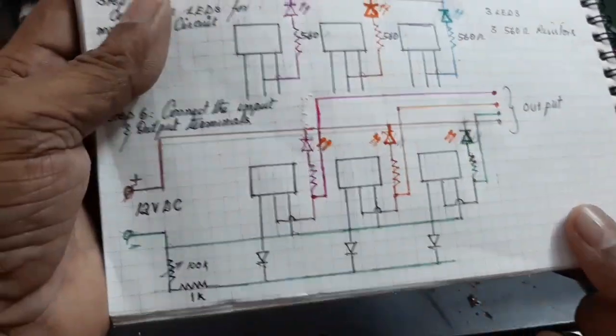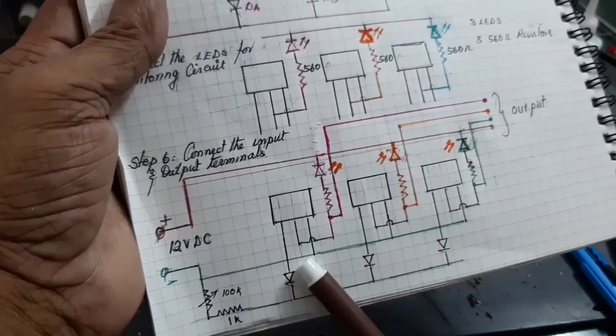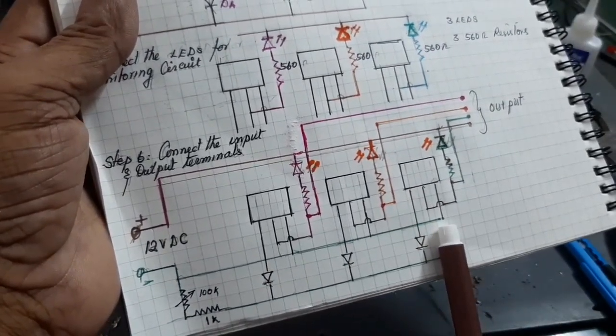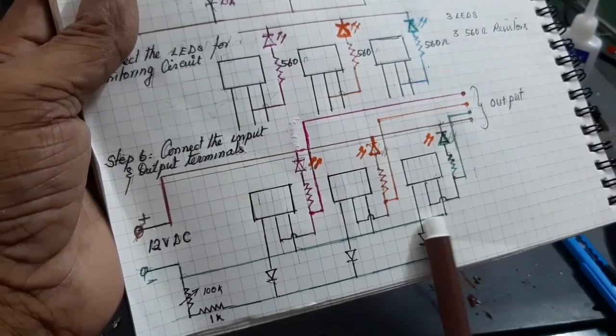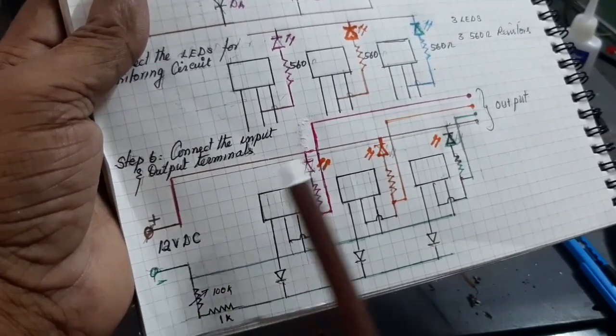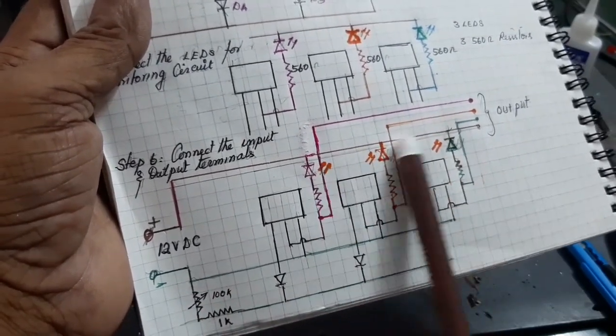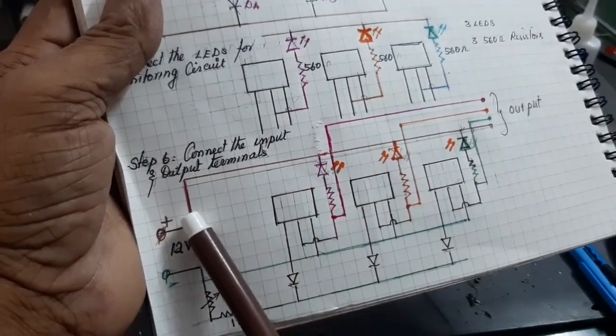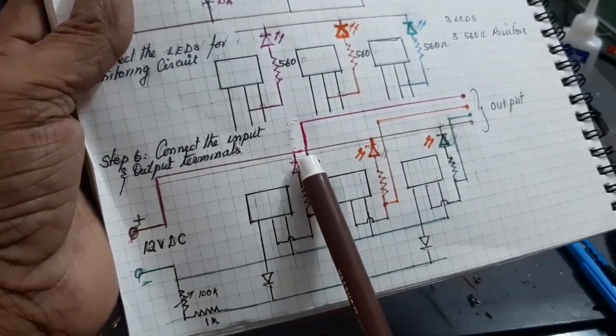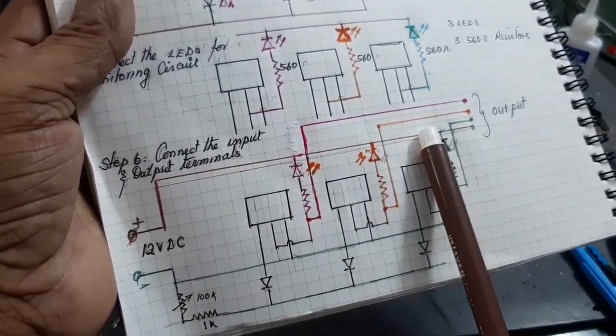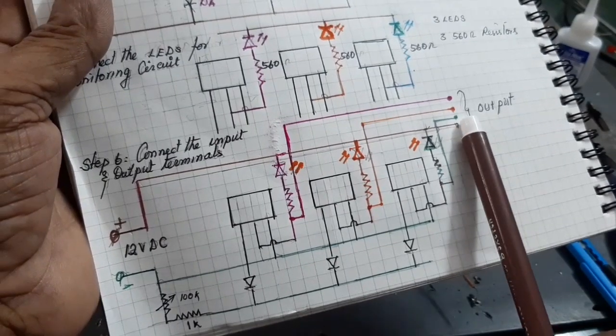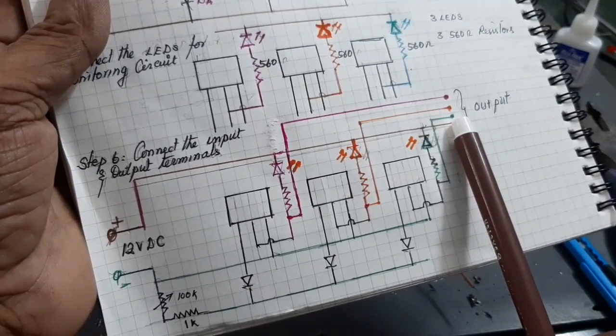Now, how to take the input and the output. Here, look at this. The source short-circuited terminals are taken as a negative. And the diodes, end terminal connected and it is taken to the positive terminal. Here, the positive terminal is taken also output of the motor. It is a common for the motor.